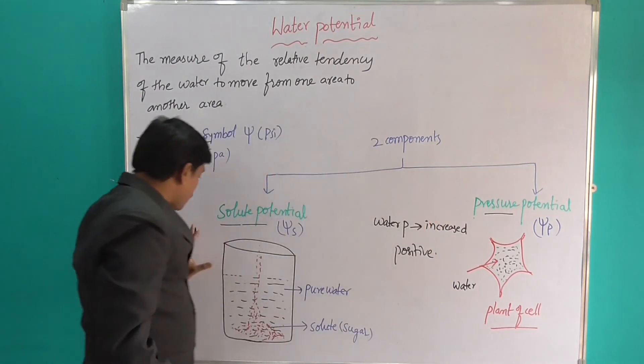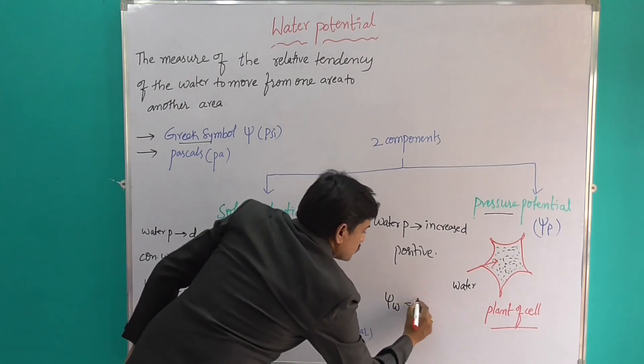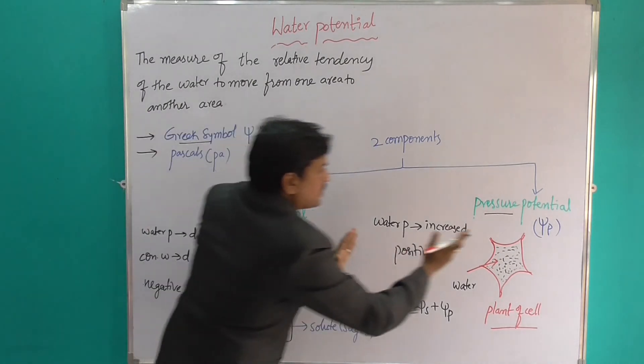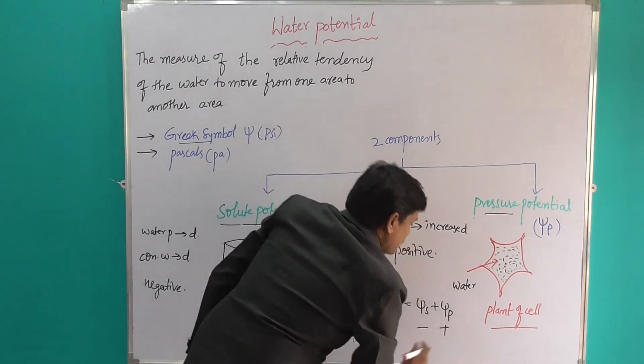This is always negative and this is always positive. For psi w (ψw): psi s (ψs) plus psi p (ψp). This is psi s and this is psi p. So psi s is negative and psi p is positive.